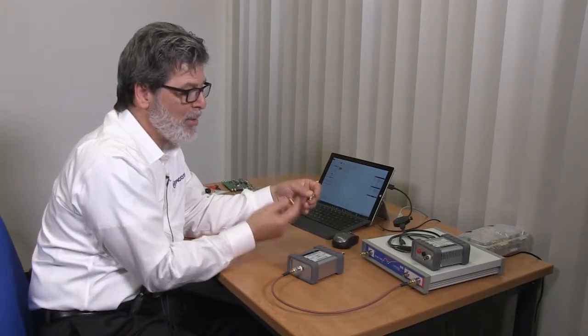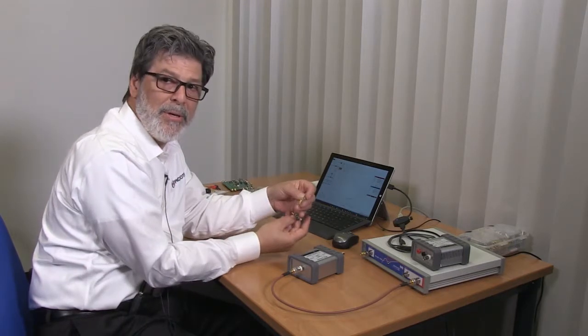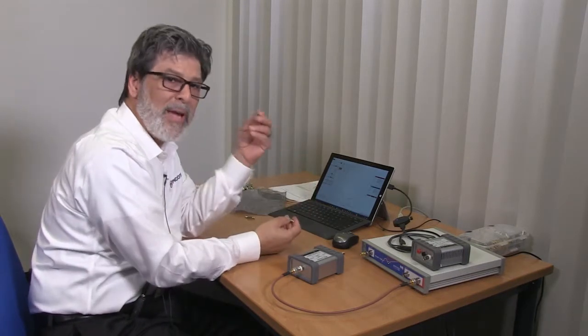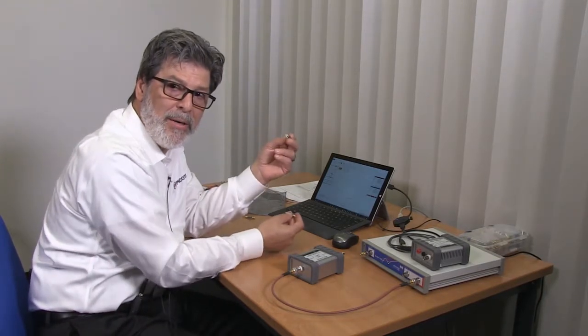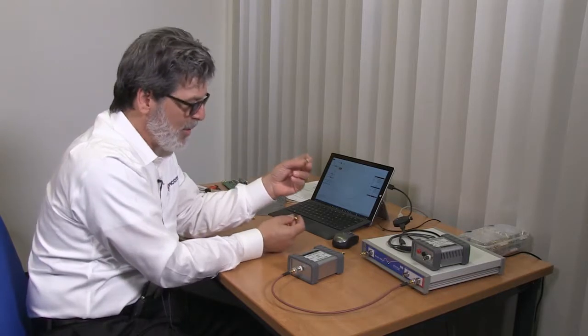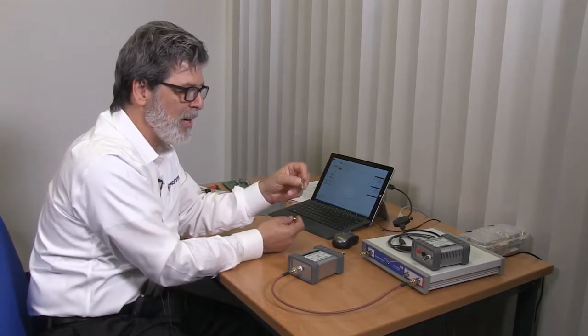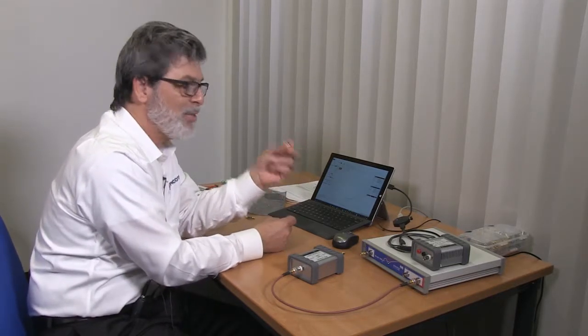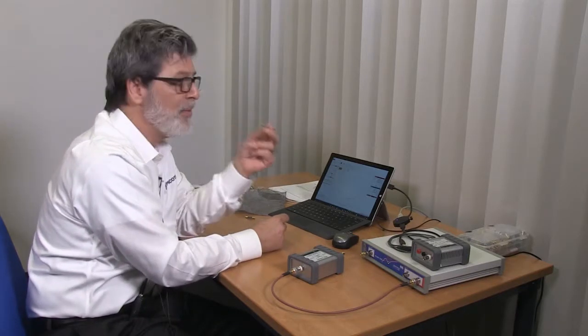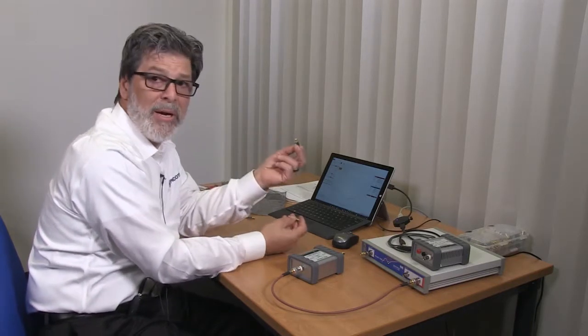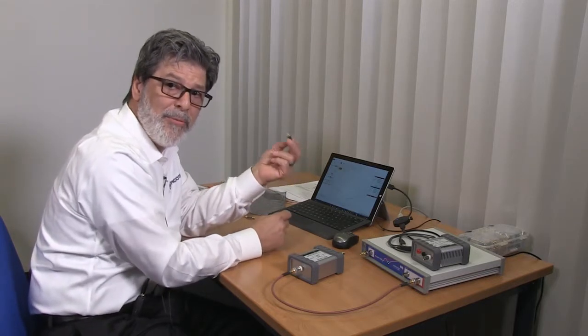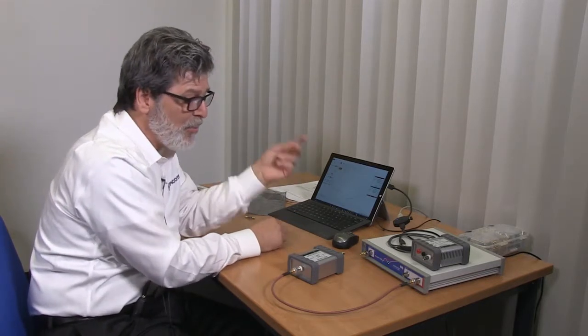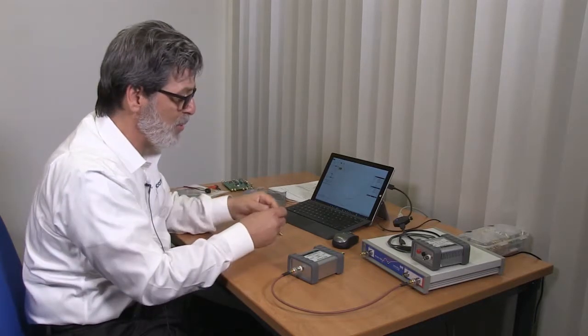And so if we included the mount in our measurement and put it into an EM simulator, we would have accounted for the mount twice. It has to be removed before we can simulate it in an EM simulator. On the other hand, if we're going to use this measurement to make a model for SPICE, SPICE knows nothing about the physical dimensions of this part, and it's not going to add the mount. And so we need to include the mount if we're making the measurement for SPICE. And so for that reason, we often end up measuring both conditions.